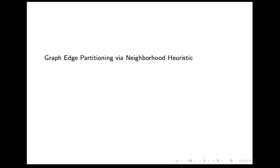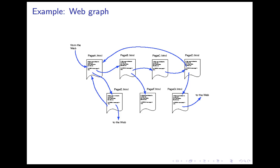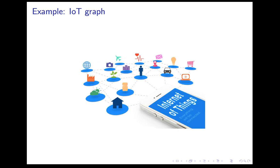Welcome to our paper, Graph Edge Partitioning by a Neighborhood Heuristic. Graphs are widely used to represent relations between entities. For example, social graphs, web graphs, and IoT graphs.